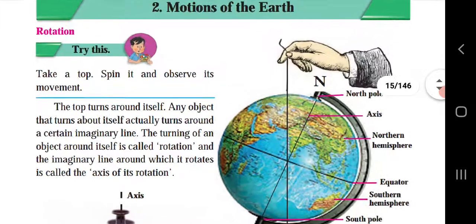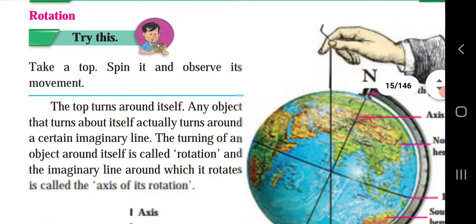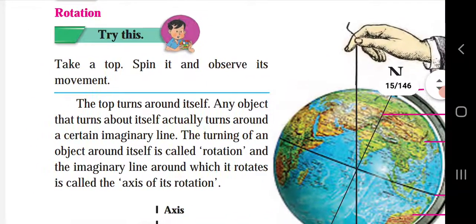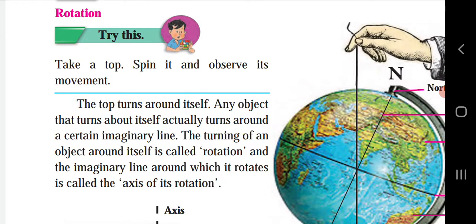Let's see rotation. Try this — take a top, spin it, and observe its movement. When we spin the top, it spins around an imaginary line. The turning of the top is called rotation. Rotation is performed around an axis.